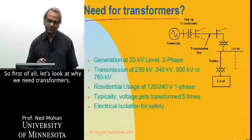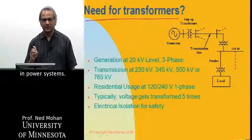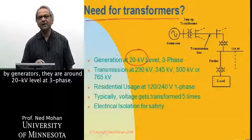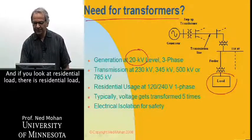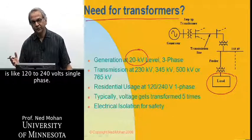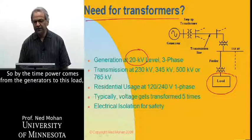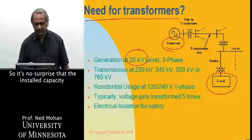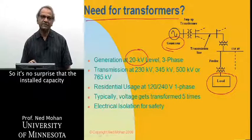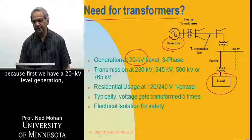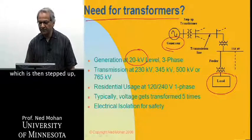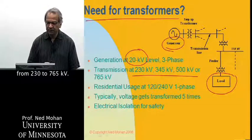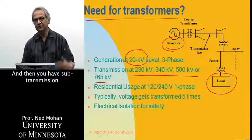First of all, let's look at why we need transformers. Transformers are a very essential apparatus in power systems. If you consider that the voltages produced by generators are around 20 kV level at three phase, and residential load is like 120 to 240 volts single phase, then by the time power comes from these generators to this load, it has gone through approximately five transformations. So it's no surprise that the installed capacity of these transformers is five times that of generators. First we have 20 kV level generation, which is then stepped up, because that's a very low voltage for high power transmission. Then transmission line voltages could be anywhere from 230 to 765 kV, and then you have sub-transmission and distribution system.